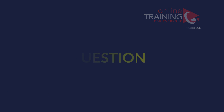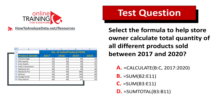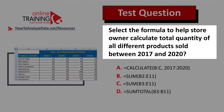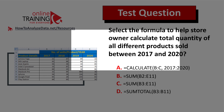Some of you might find this question tricky, but regardless of whether you can figure out the solution on your own, you will be excited to learn the answer to this real-life assessment test question. Select the formula to help a store owner calculate the total quantity of all different products sold between 2017 and 2020.